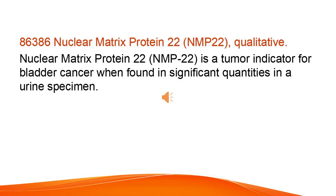Nuclear Matrix Protein 22, NMP22, qualitative. Nuclear Matrix Protein 22, NMP22, is a tumor indicator for bladder cancer when found in significant quantities in a urine specimen.